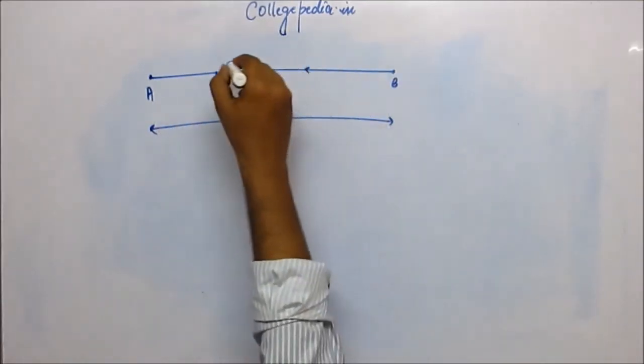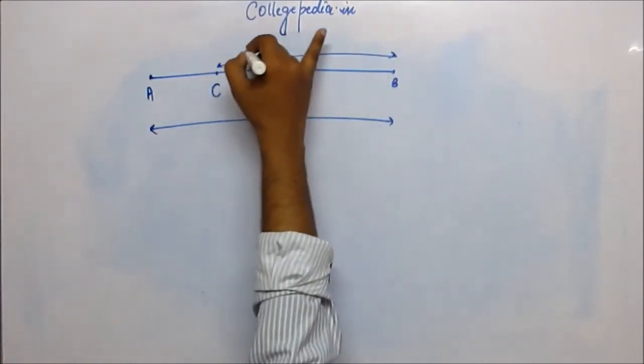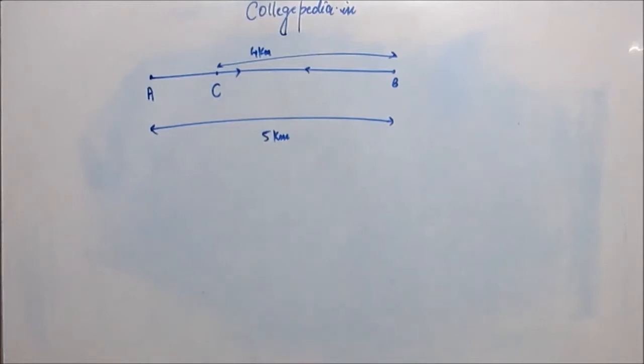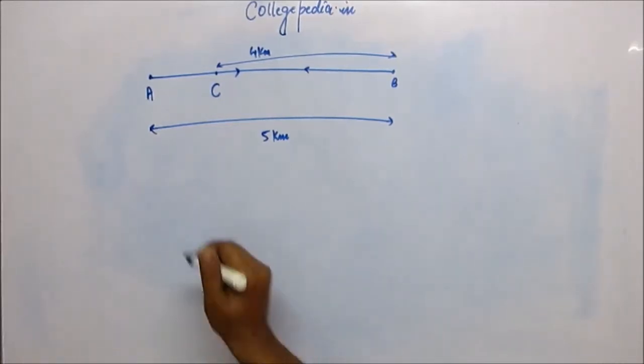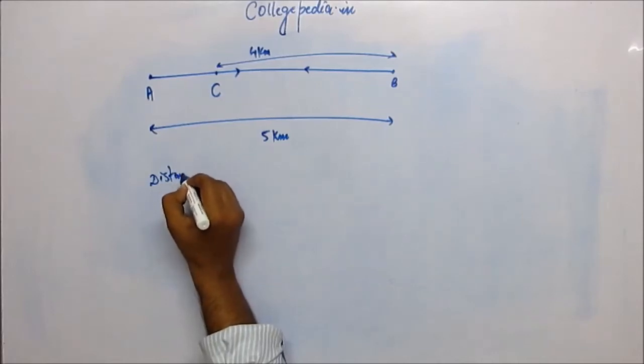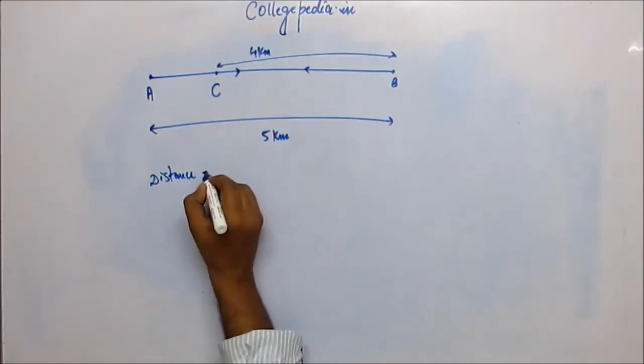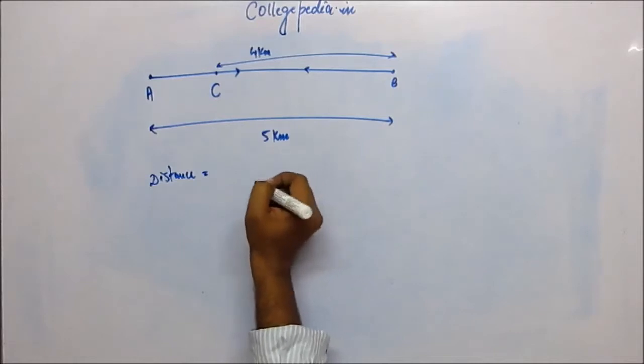The distance between A and B, let's assume to be 5 kilometers. The distance between B and C, let's assume to be 4 kilometers. The distance between A and C would be 1 kilometer. Now, if somebody asked what was the distance traveled by this person, distance traveled is actually the path distance—the path traveled by this person.